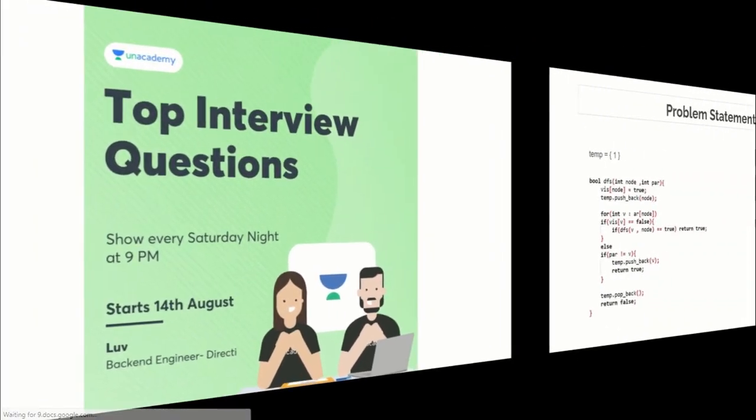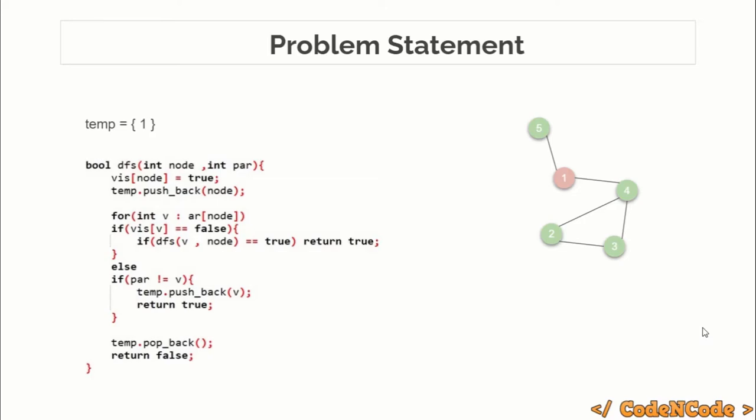So suppose from the main function you made a DFS call on node 1, and since node 1 is not being called by other node, we will pass minus 1 as its parent. As soon as you reach there, you mark it as visited. Pink color represents visited. Then you will insert current node into the temp, so now in temp we have one. Here we are going one by one in the adjacency list of node 1 to see what nodes are there.